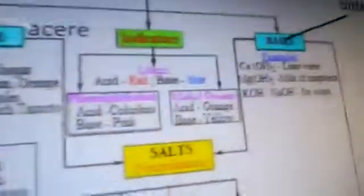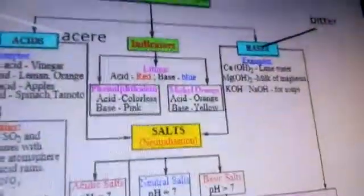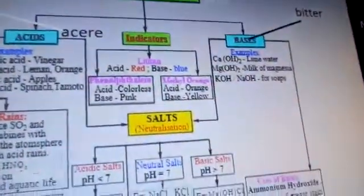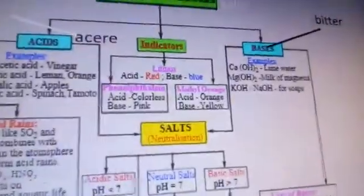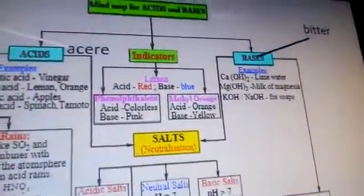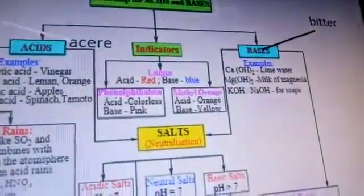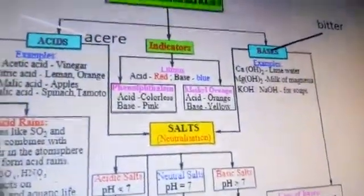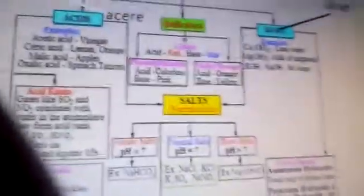The next topic is indicators. There are many types of indicators, for example litmus, phenolphthalein, and methyl orange. Indicators are used for indicating whether a substance is acidic or basic.